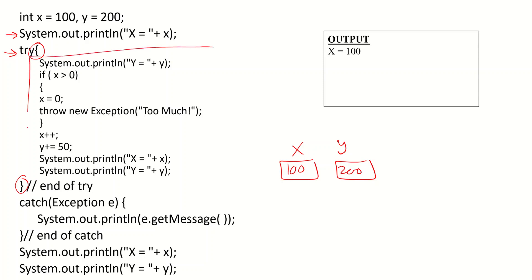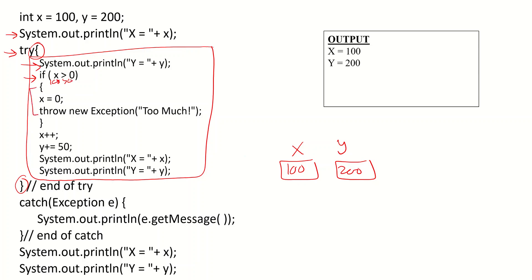The try block includes these statements. The first statement outputs y equal the value of y. Currently the value of y is 200, so we will have y equals 200. Then we have an if statement: if x is greater than 0. In our case x is 100, so 100 is greater than 0, so we execute the two statements: x should equal 0, and then we throw an exception with the message 'too much'.